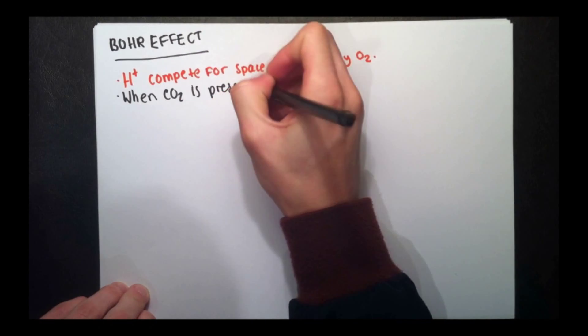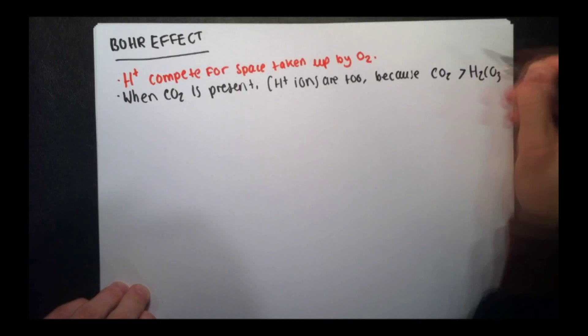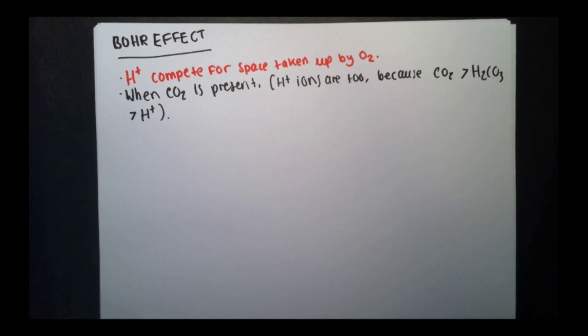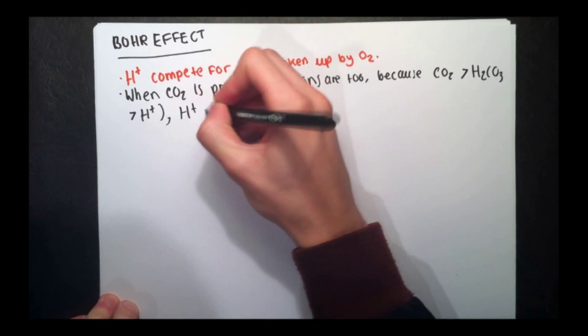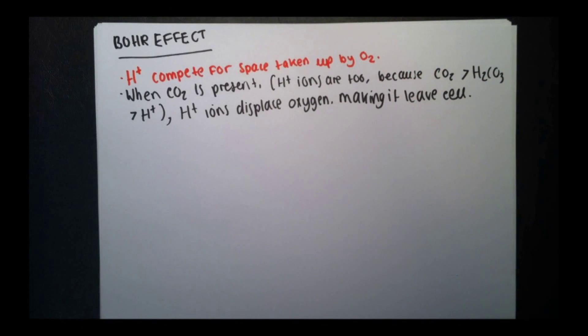So when carbon dioxide is present, this actually means that H+ ions are too, because the CO2 turns into carbonic acid, which then dissociates into hydrogen ions. This means more hydrogen ions are there. So the hydrogen ions are there to displace the oxygen needed to leave the cell.